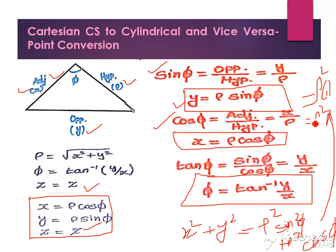From this relation x squared plus y squared equals rho squared, we derive rho equals square root of x squared plus y squared. This is the formula to convert Cartesian to cylindrical and cylindrical to Cartesian.